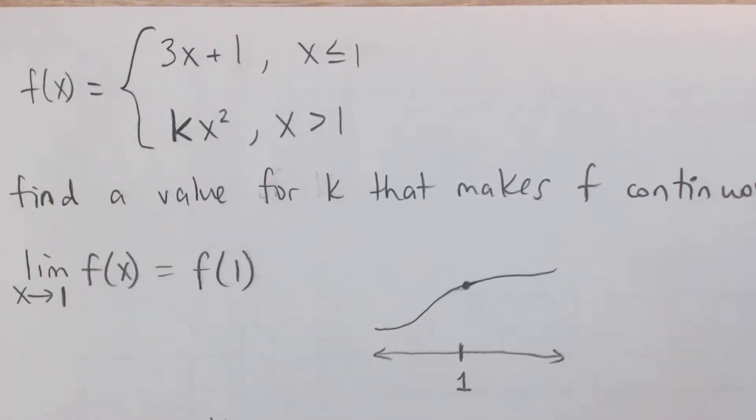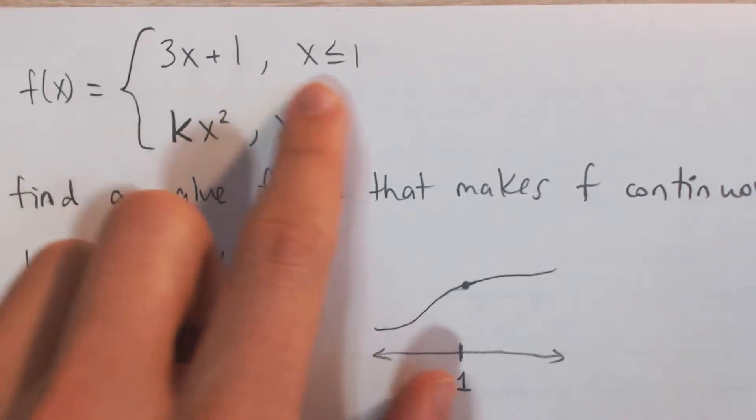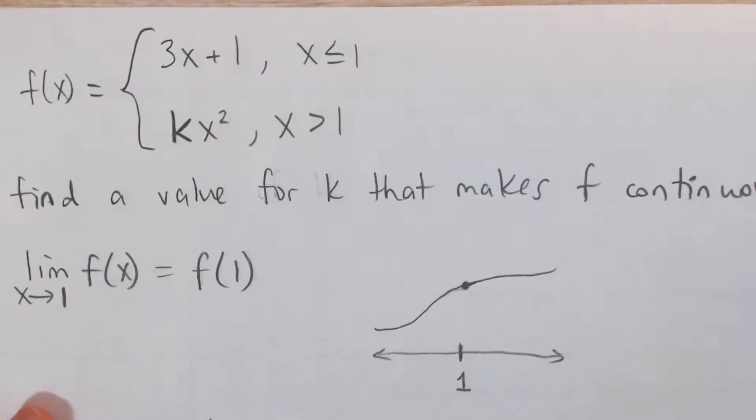Okay, so here we're given a piecewise defined function. It's 3x plus 1 when x is less than or equal to 1, and kx squared when x is greater than 1.